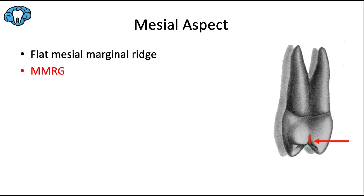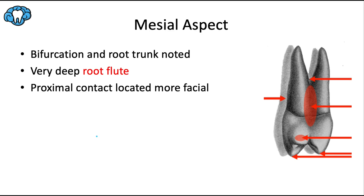Looking at the mesial aspect, there's a pretty flat mesial marginal ridge that's basically perpendicular to the long axis. A very important landmark for this tooth is the mesial marginal ridge groove, seen mostly and only on maxillary first premolars — a super important distinguishing feature of this tooth.